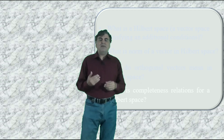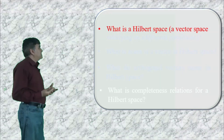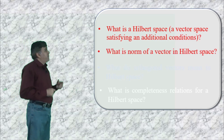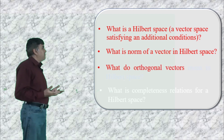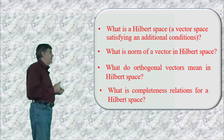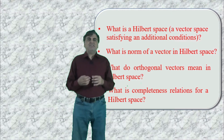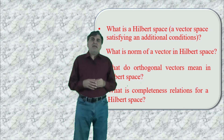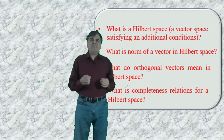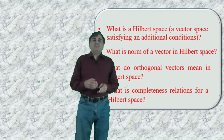In this video I'm discussing the concept related to these four fundamental questions: what is Hilbert space — a vector space satisfying an additional condition; what is the norm of a vector in Hilbert space; what is meant by orthogonal vectors in Hilbert space; and what is meant by the completeness relation for a Hilbert space. From this point onward I will mostly use the terminology of physicists and use the phrase Hilbert space instead of the general phrase vector space.